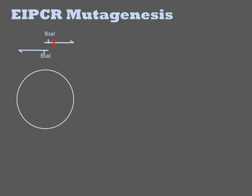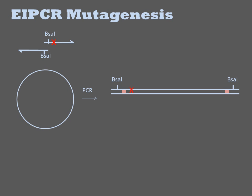You design two oligos that both anneal near the site of mutation, but are oriented such that the polymerization occurs away from one another around the circle. This results in a linear double-stranded PCR product like any other PCR.